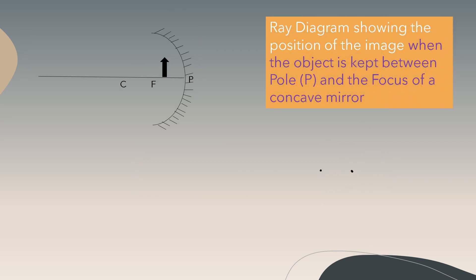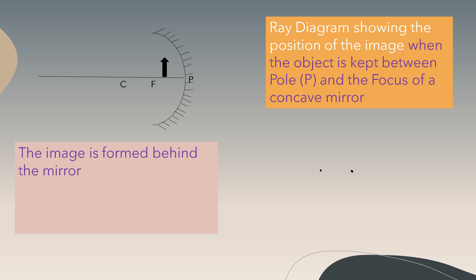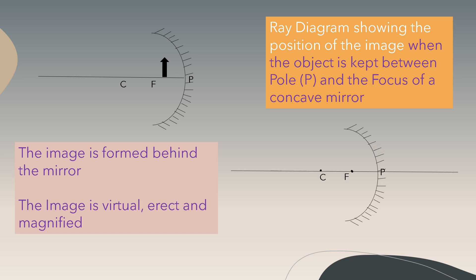Next, the ray diagram when the object is kept between the pole and the focus of a concave mirror. The ray parallel to the principal axis passes through the focus. The second ray is drawn through the center of curvature, and since there is no deviation when a ray passes through the center of curvature, the image is virtual, erect, and magnified. The image is always formed behind the mirror.